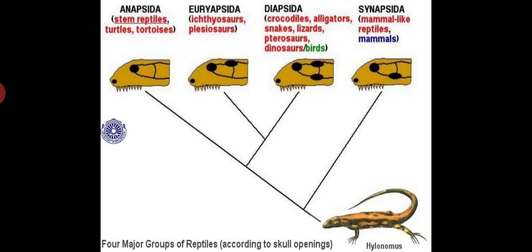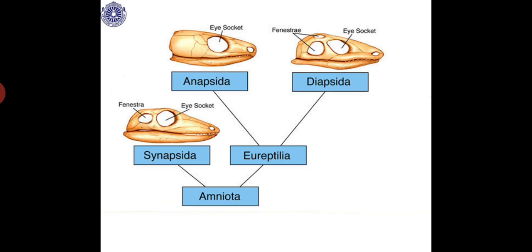These reptiles originated from primitive stem reptiles called Hylonomus. As you observe here, from that Hylonomus-type ancestral stock, various types of reptiles evolved — Anapsids, Euryapsids, Diapsids, and Synapsids. This slide shows the origin and evolution of temporal fossa in reptiles.